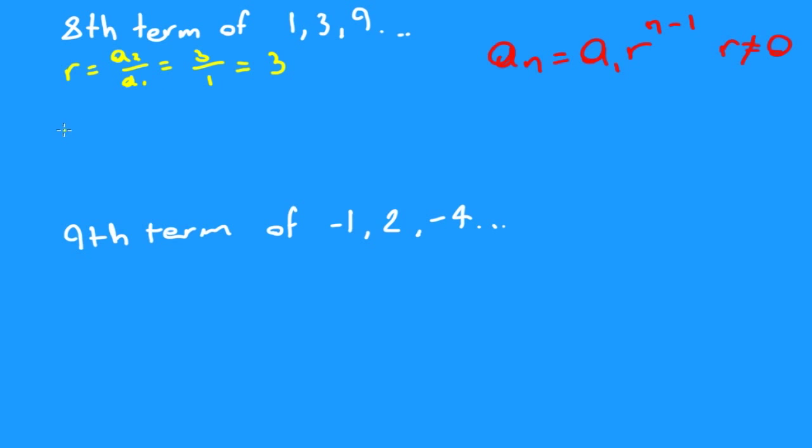We got our ratio there. Now let's get our a_8 using our formula. Our first term is 1, so 1 times our ratio, which is 3 to the 8 minus 1. That would be equal to 3 to the 7th power. Plug it into your calculator and you will get 2187. And that's the 8th term of this.